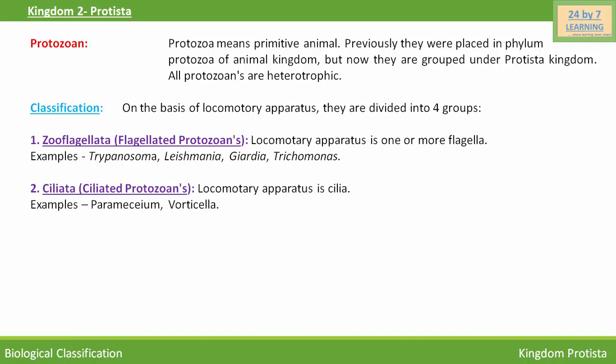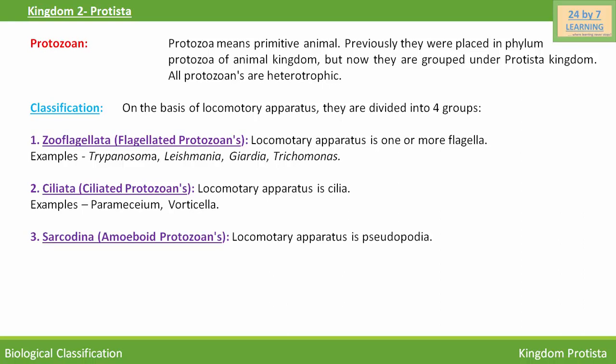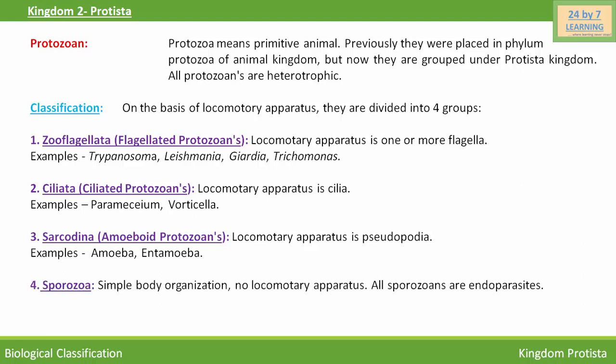Third is Sarcodina, also called amoeboid protozoans. Examples include Amoeba. The fourth class of protozoans is Sporozoa. They have simple body organization with no locomotory apparatus. All sporozoans are endoparasites. Their examples are Plasmodium, which is a malarial parasite, and Monocystis, which is an endoparasite of earthworms. Thank you.